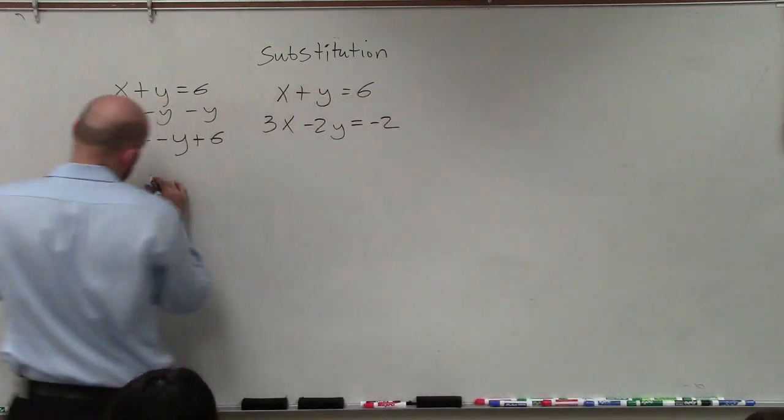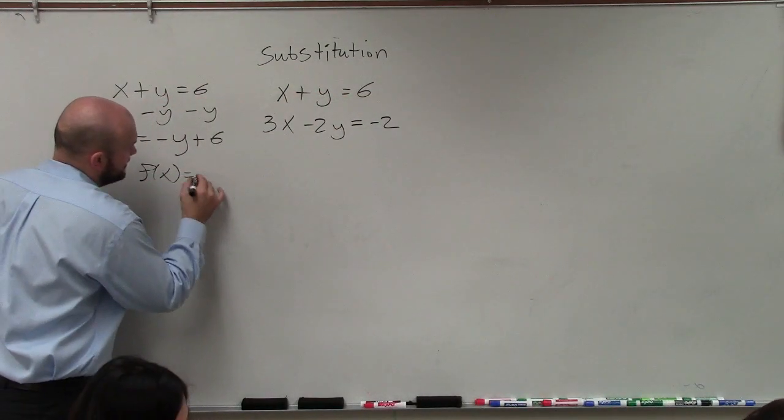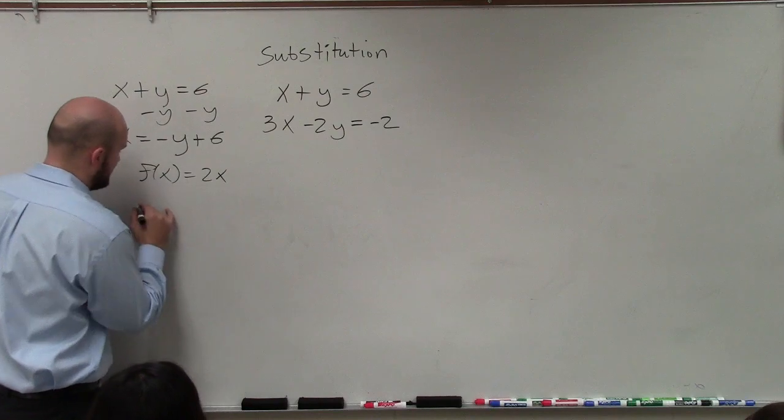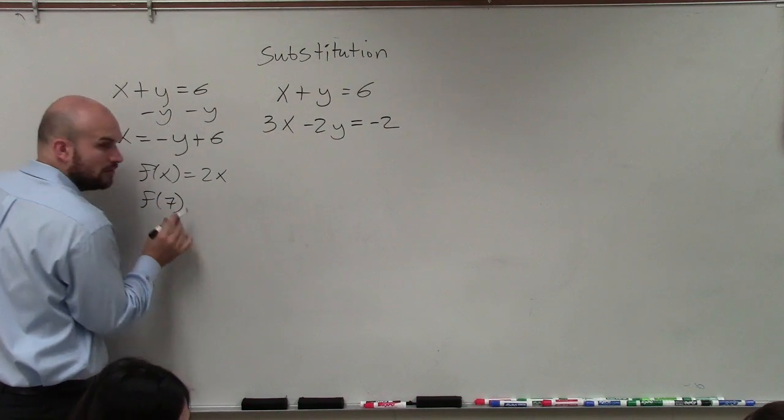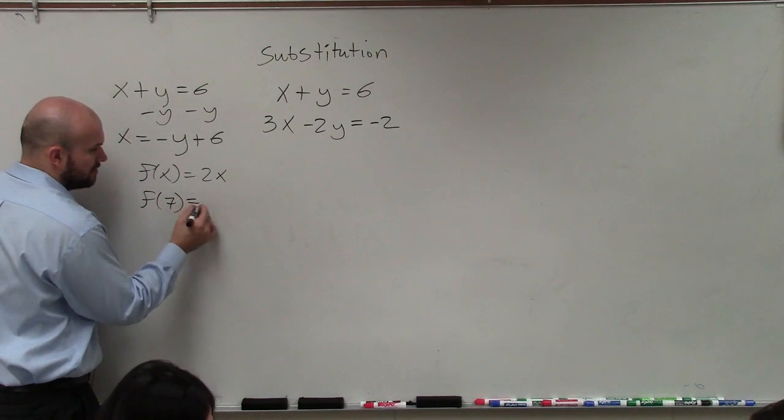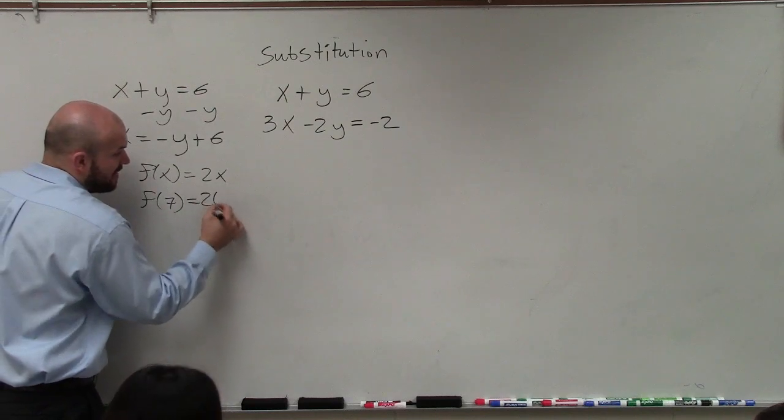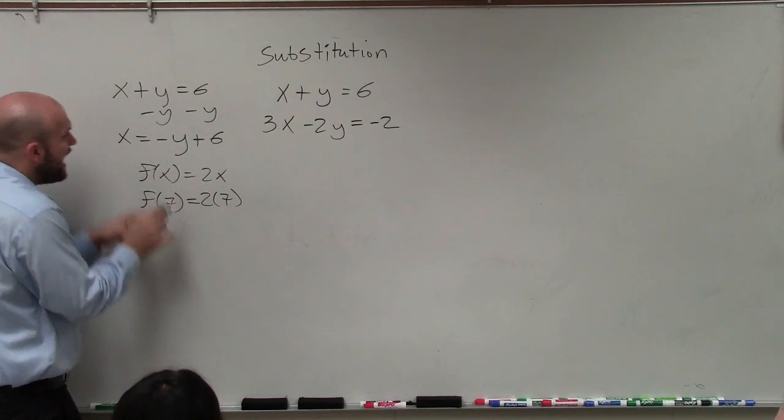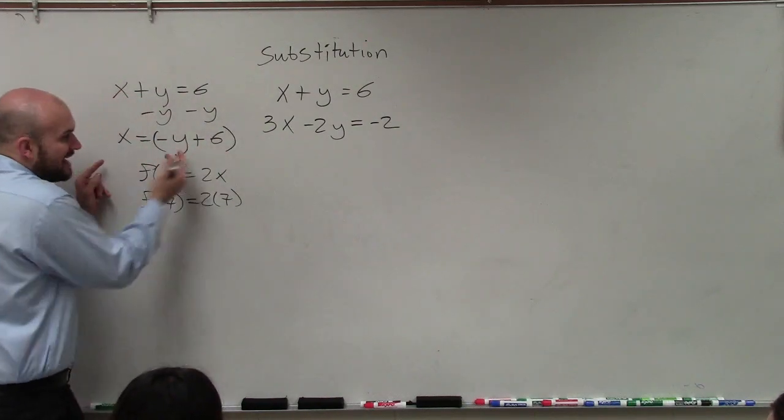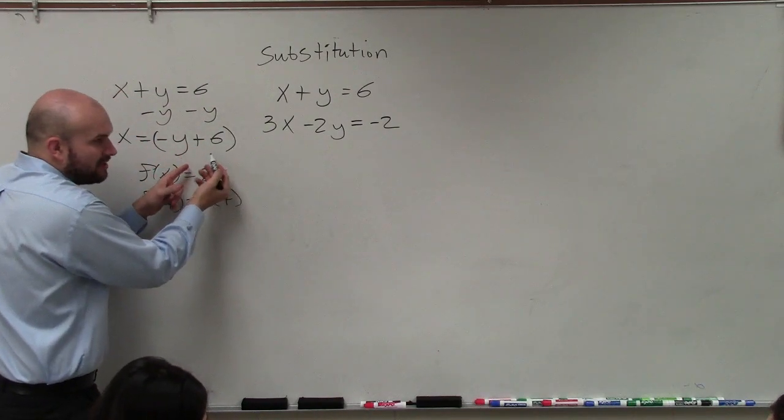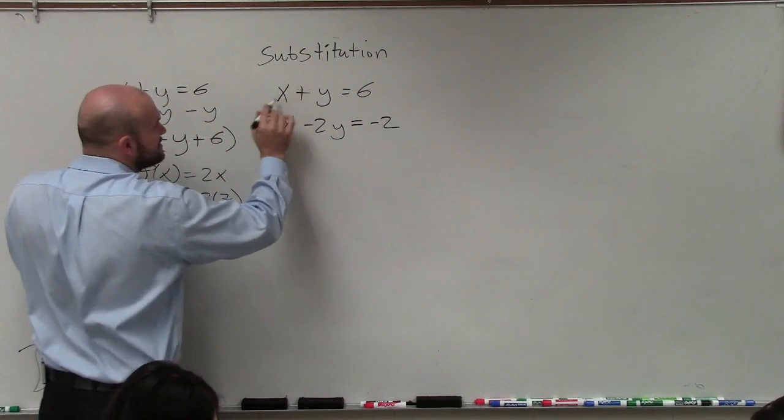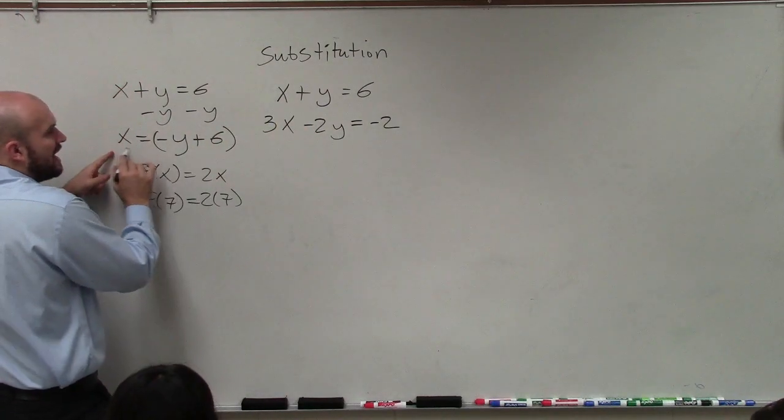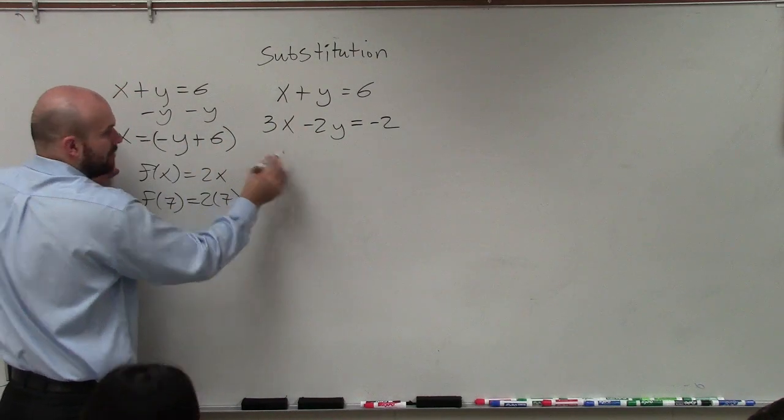So just like when we looked at functions, if I said f of x equals 2x, and then I say, what is f of 7? Where'd you put the 7 in for? Yeah, you put the 7 in for x. Because x was equal to 7. Now x is equal to an expression. It's not equal to a number. It's equal to an expression. However, I can now take what x is equal to and plug it into the other equation.